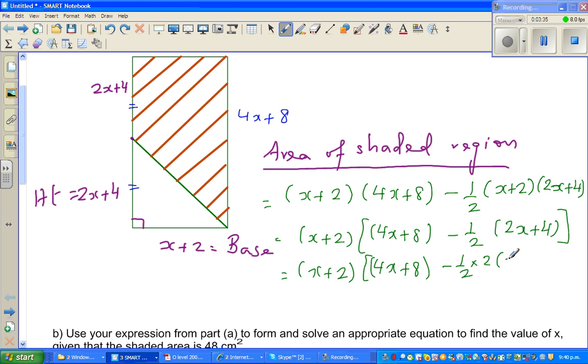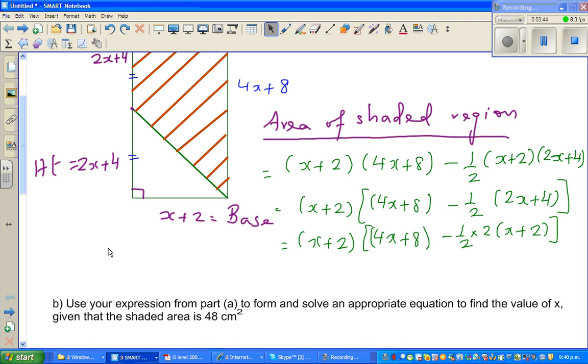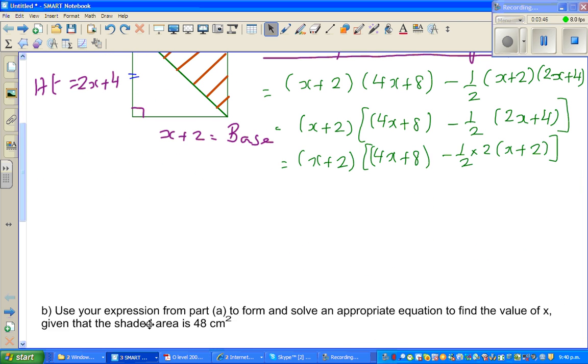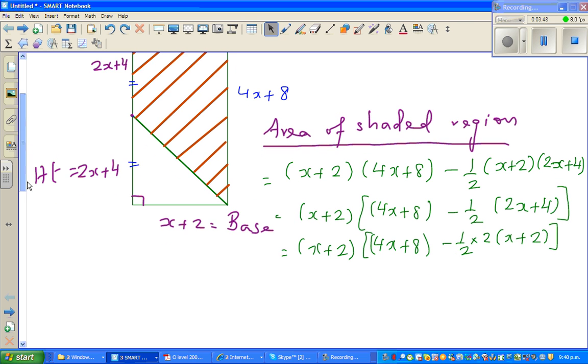Now half, you can take again a 2 out here. So if you take a 2 out it'll be (x + 2) again. I'll have to scroll this down.